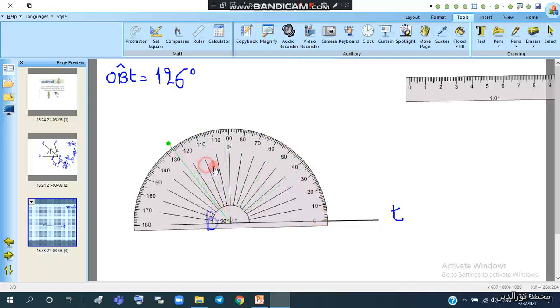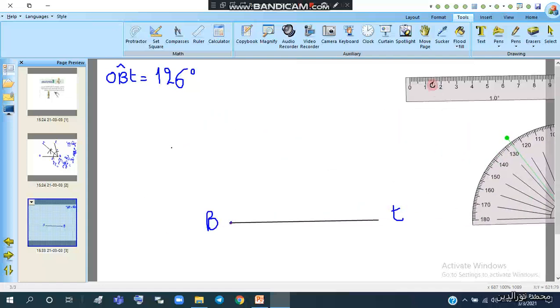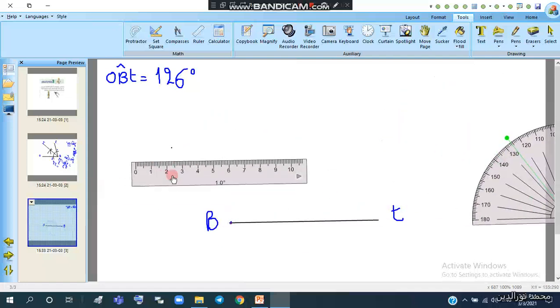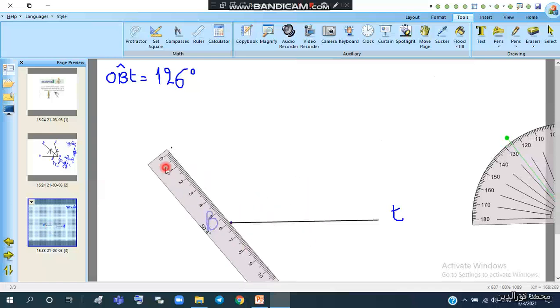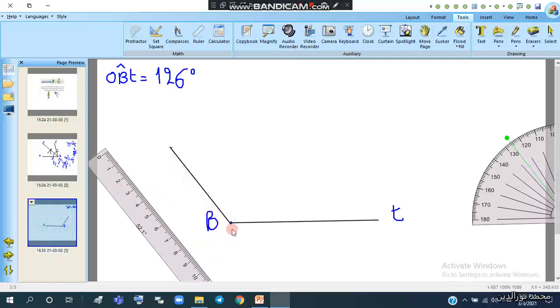We mark at 126. Then using the ruler, we draw this side that passes through the two points, the vertex and the point we marked. This is side BO.